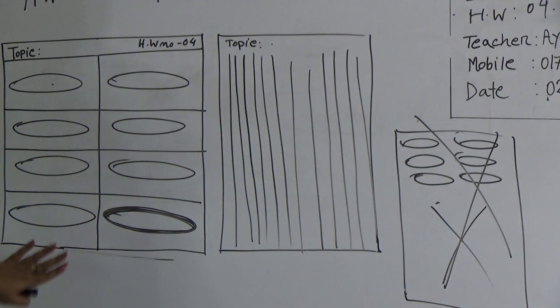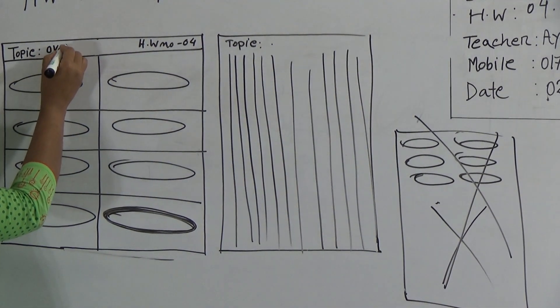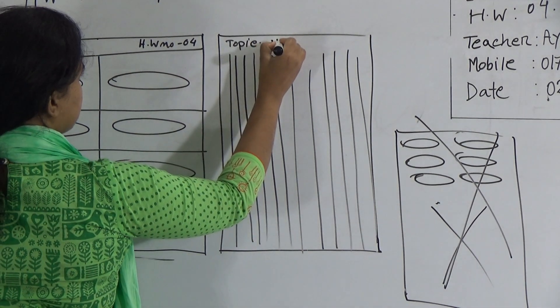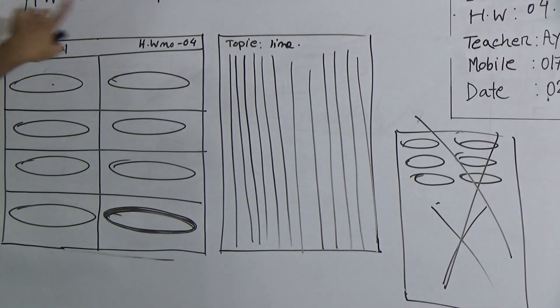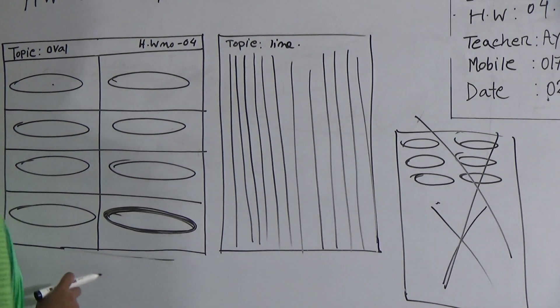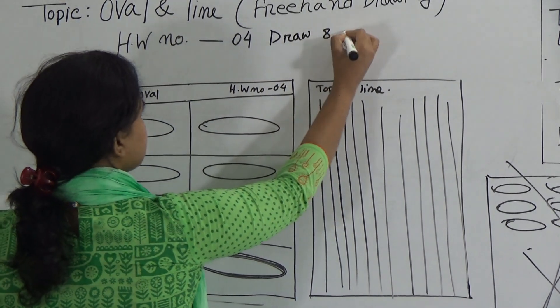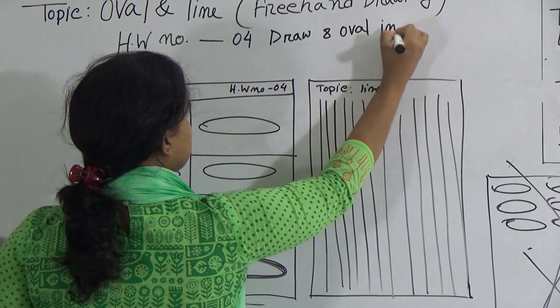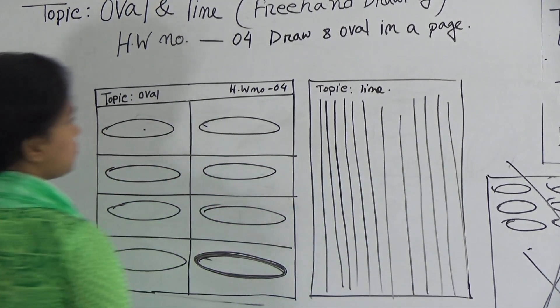This one is your HW. And HW number 4. Write the topic. Oval. When you draw the line, you will write the topic line. And write down the HW number. So, your HW number 4. Oval. 8 oval. Draw 8 oval in a page. This one is your HW.